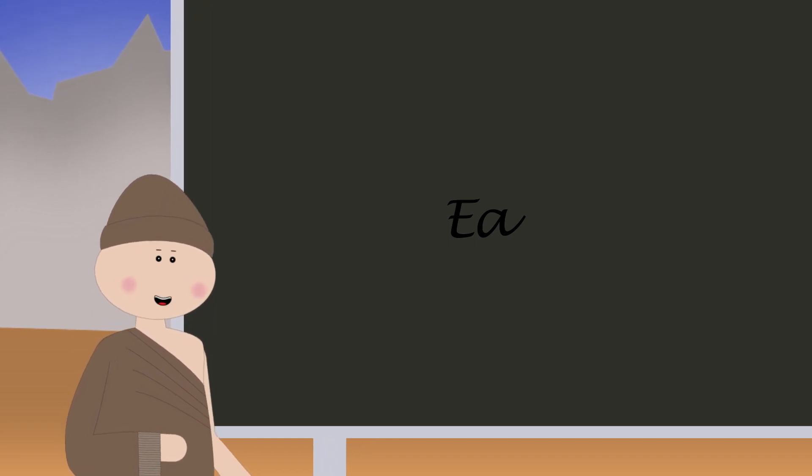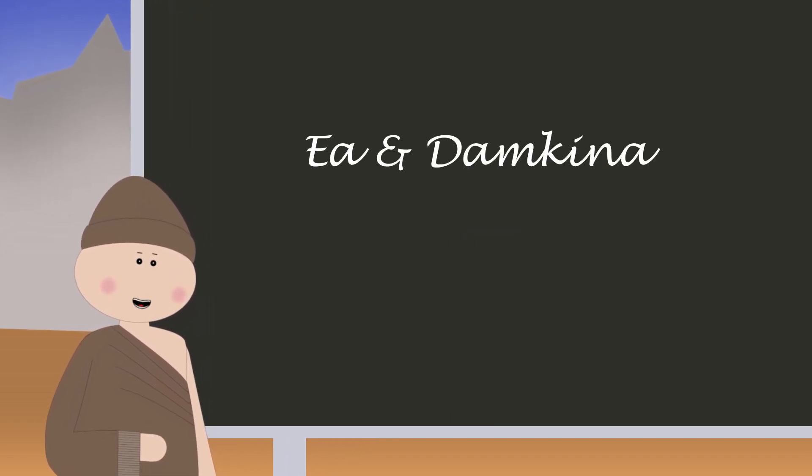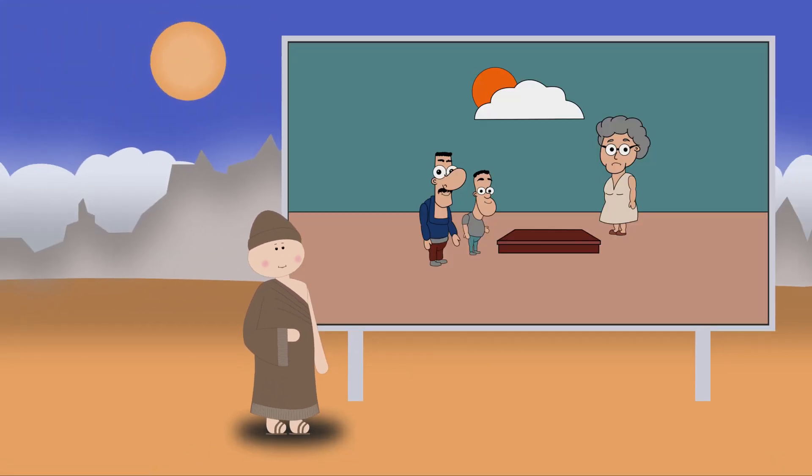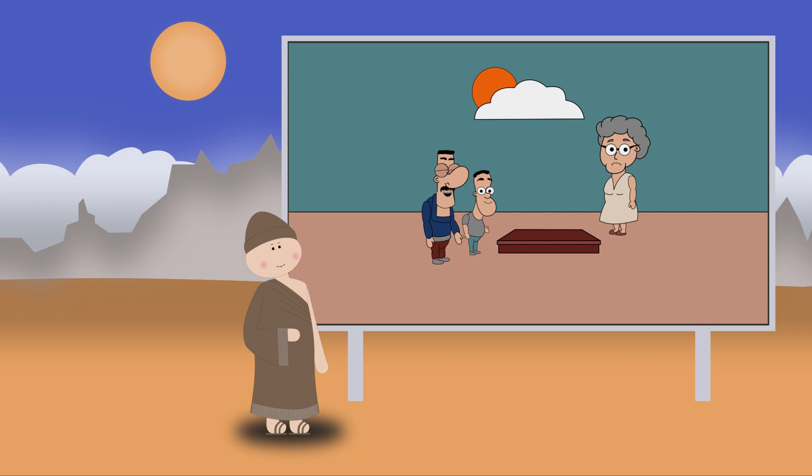He consorts with Damkena and produces another son, Marduk. Marduk, here lies your grandfather. He was a great man. How did he die? Your father killed him. You shouldn't have said that.